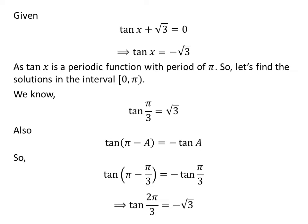π minus π upon 3 is equal to 2 times π upon 3. And plugging the value of tangent of π upon 3 gives us tangent of 2 times π upon 3 is equal to minus square root of 3.